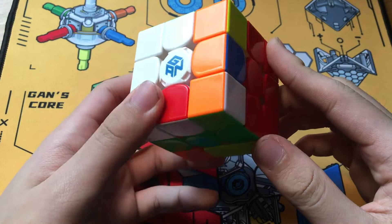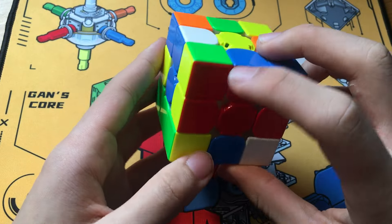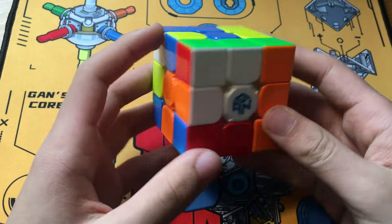He's going to do an x-cross with this block and this edge corresponding to it, preserving this pair in inspection and also the second pair, which is this corner and this edge.